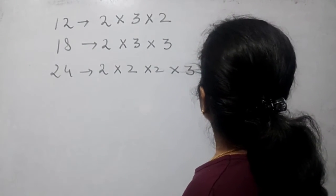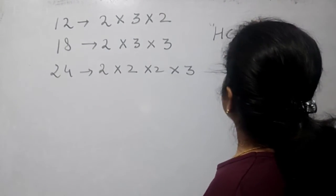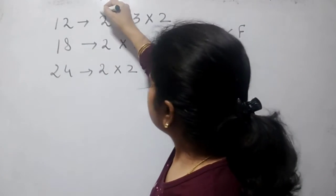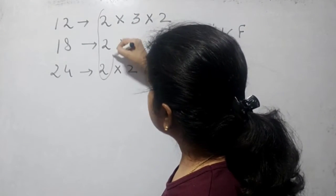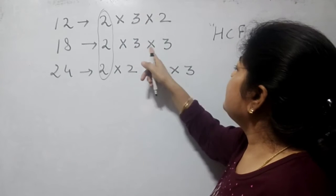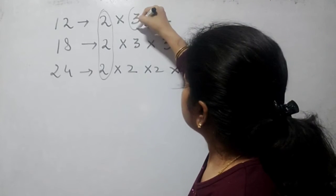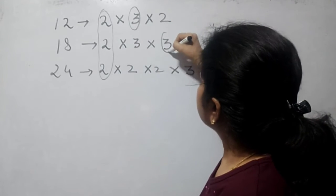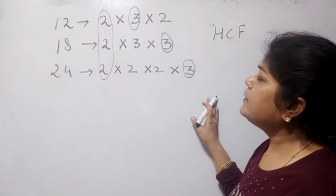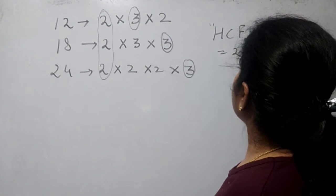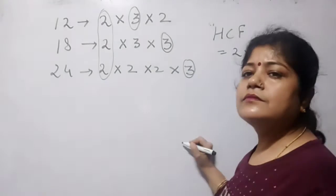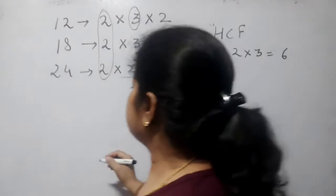For the HCF, we just take the number which comes in all three. We see here, 2 comes in all of them. Also 3 comes in all of them — 3 appears in 12, 18, and 24. So HCF is equal to 2 into 3, which is equal to 6. Now for LCM.